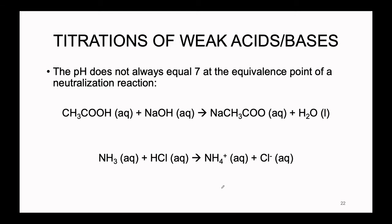However, the pH at the equivalence point is not always equal to 7. For HCl and NaOH it always is, but for other reactions it will not be. For example, if we perform a titration of a weak acid or base, the pH at the equivalence point ends up being either less than or greater than 7. To understand this, let's look at two different neutralization reactions — a weak acid neutralization and a weak base neutralization.